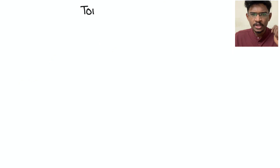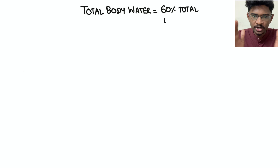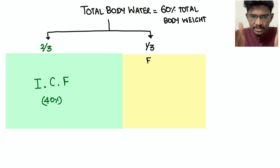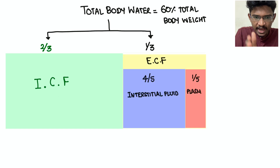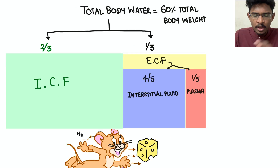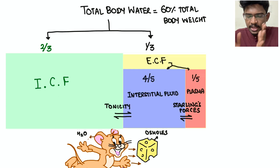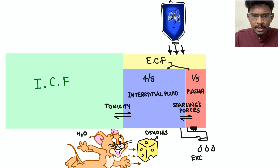Total body water is 60% of total body weight. Two-thirds is the intracellular compartment and one-third is the extracellular compartment. The extracellular compartment is divided into four-fifths interstitial and one-fifth plasma. Water movement between ICF and interstitial compartment is governed by tonicity, while movement between interstitial compartment and plasma is determined by Starling's forces.